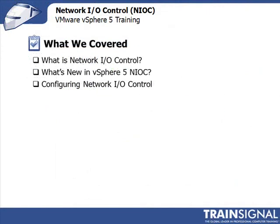That brings us to the summary for this lesson covering Network I.O. Control. We answered what Network I.O. Control — or NIOC — is: essentially quality of service for the virtual network, available only in vSphere Enterprise Plus, requiring a distributed virtual switch. Network I.O. Control has predefined network resource pools for common virtual infrastructure services, and new in vSphere 5 you can create your own user-defined network resource pools. Thanks for watching this lesson on vSphere 5 Network I.O. Control.